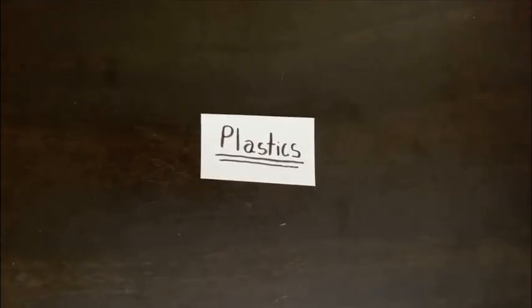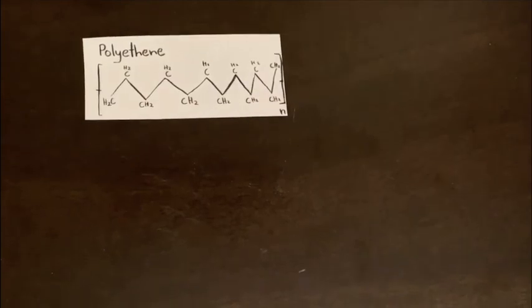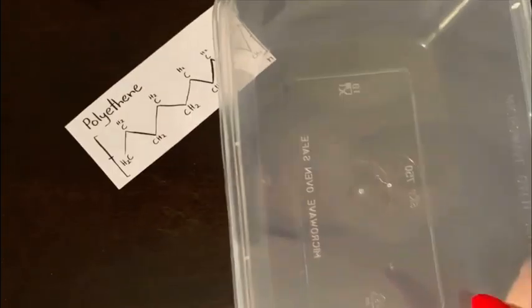Plastics are polymers which attain different properties which can be manipulated through the monomers. The first one is polyethene. They are most commonly used for plastic containers, plastic bottles, and plastic bags.